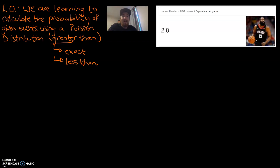Hey guys, Mr. Bowman here. Today's learning objective is in orange and we are learning to calculate the probability of given events using a Poisson distribution. And big emphasis, we are focusing on greater than questions. These questions are different to questions from two previous videos where we found the probability of an exact event and the probability of a less than event.